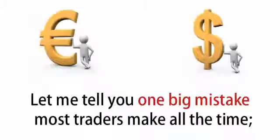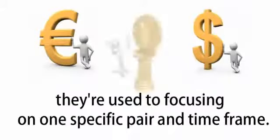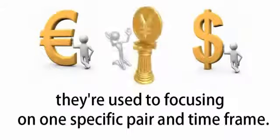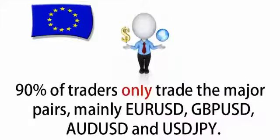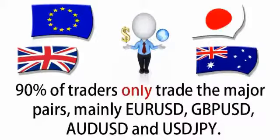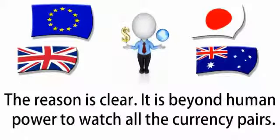Let me tell you one big mistake most traders make all the time. They're used to focusing on one specific pair and timeframe. 90% of traders only trade the major pairs, mainly the Euro, the Cable, the Aussie and the Yen. The reason is clear — it's beyond human power to watch all the currency pairs.